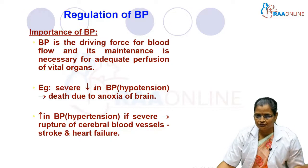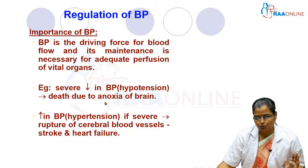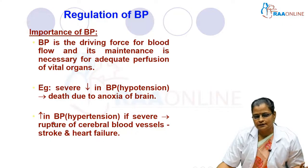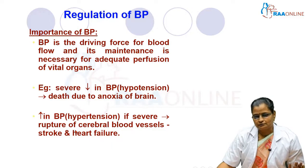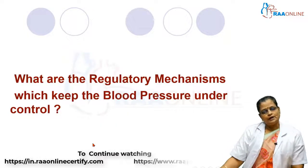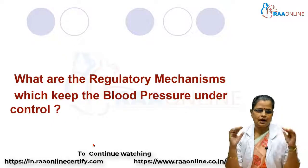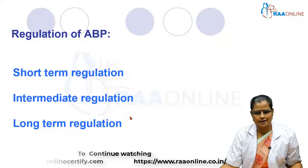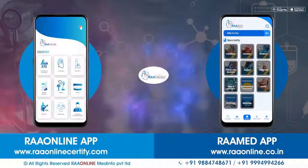If there is a severe fall in blood pressure — hypotension — it leads to death due to anoxia of the brain, meaning complete absence of oxygen supply to the brain. If there is a severe increase in blood pressure — hypertension — it causes rupture of cerebral blood vessels leading to stroke, and can also produce heart failure. The regulatory mechanisms which keep blood pressure under control will be discussed under three headings, starting with short-term regulation.